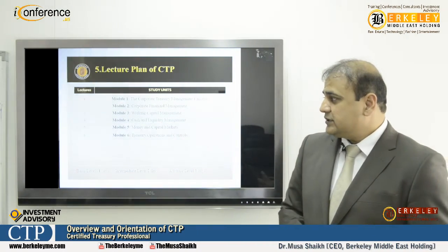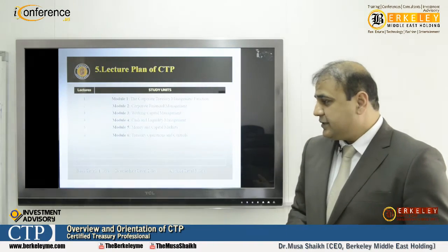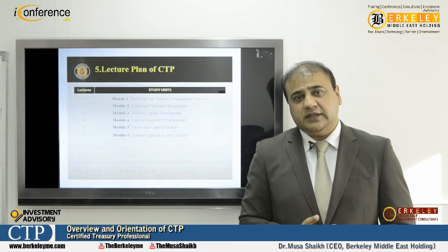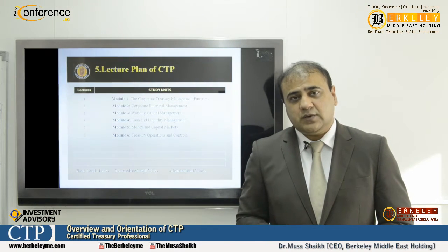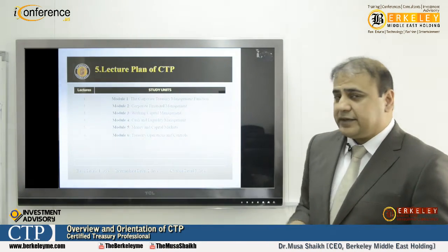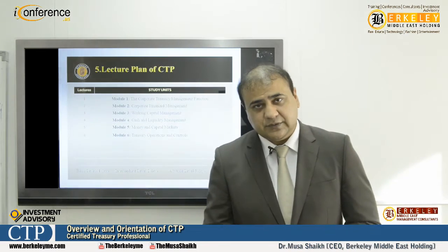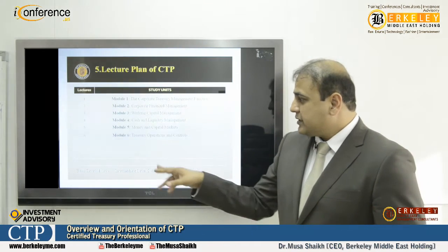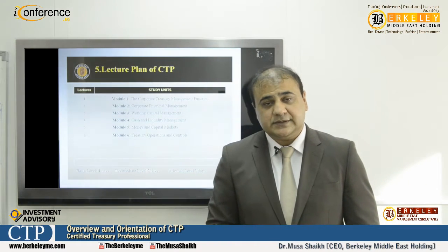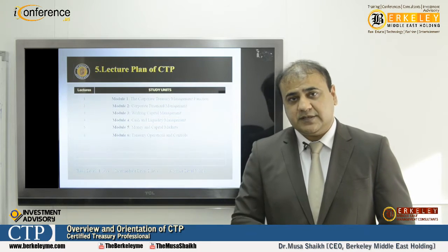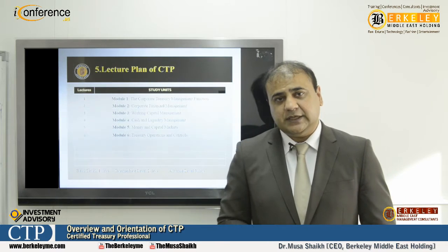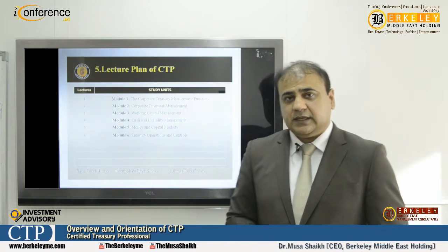Cash and liquidity concepts lead into money and capital markets. We have two types of markets: the money market, dealing with instruments less than one year — more liquid instruments like treasury bills and T-notes — and capital markets, related to securities, stocks, and stock markets. Finally, we cover treasury operations and controls: regulatory requirements and operational requirements. All modules make this course very interesting for banking and other professionals.